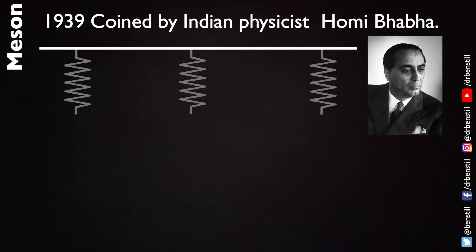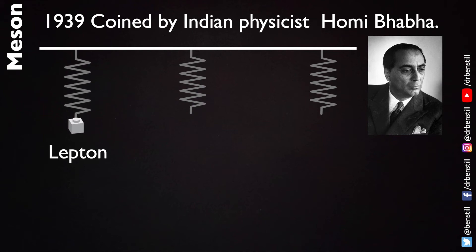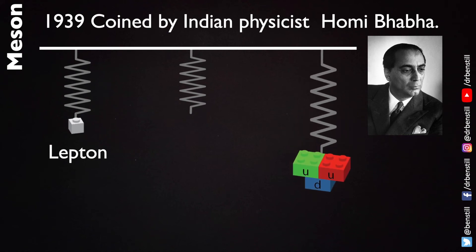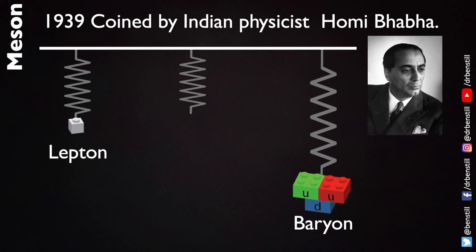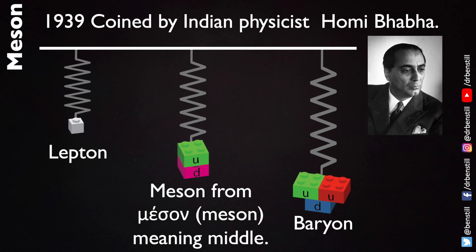The name meson was coined in 1939 by Indian physicist Homi Bhabha. The electron and associated particles were given the name lepton from the ancient Greek 'leptos' meaning small. The proton and neutron were collectively called baryons from the ancient Greek 'barys' meaning heavy. The mesons took their name from the Greek 'meson' meaning middle, because their mass was in between that of the light leptons and the heavy baryons.